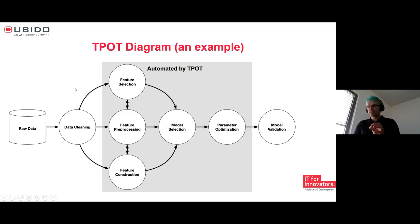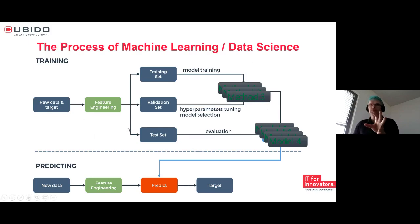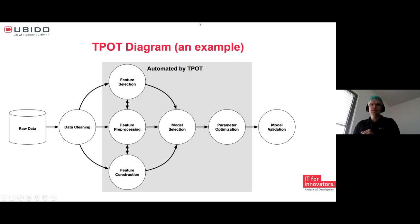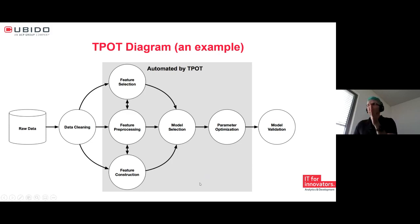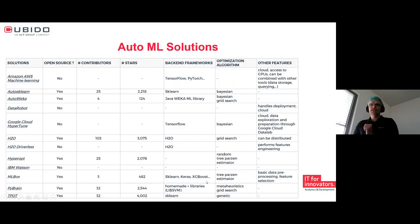TPOT is one of the earliest AutoML implementations and is still very good. Its diagram shows the same pipeline: raw data, data cleaning, feature processing, model, parameter optimization, and model validation. TPOT puts special focus on feature selection and feature construction in a loop, which is very important — if you don't know how to engineer features, the tool must do it for you.